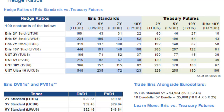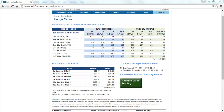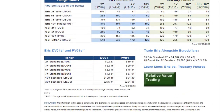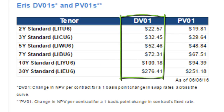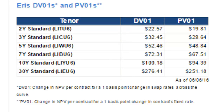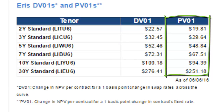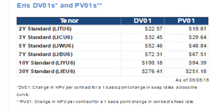87 contracts of the 10-year Treasury Futures would create a DVO-1 neutral portfolio versus 100 7-year Eris Standards contracts. Note that the chart gets updated regularly and is timestamped for when it was last updated. The Hedge Ratios webpage also displays DVO-1s, which is the change in NPV per contract for a one basis point change in swap rates across the curve, as well as PVO-1s, which is the change in NPV per contract for a one basis point change in the contract's fixed rate.